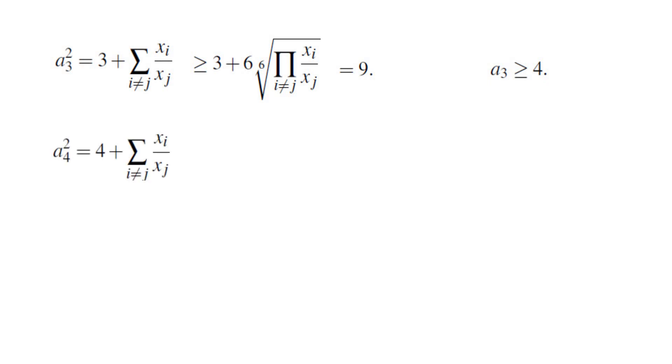So let's look at a4. a4 with the same reasoning is 4 plus the sum of xi over xj and doing the same thing we get 4 plus there are 12 terms because there are 4 possibilities for i, 3 possibilities for j, there are 12 terms, the equality does not hold, that means a4 is at least 5.